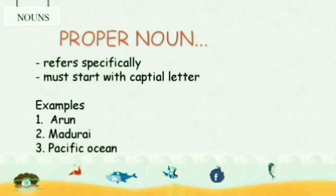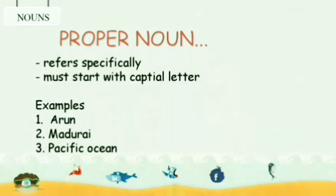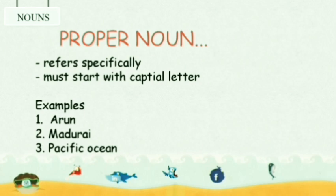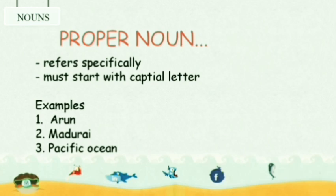Now let us see proper noun. Proper noun refers to things, places, or human beings in a specific manner. It particularizes the person and it must start with a capital letter. See the example. The first one is 'Arun' — here, we are particularizing a boy. The second one is 'Madurai' — it is the name of a city, so we are particularizing a place. And the third one is 'Pacific Ocean' — here, we are specifically mentioning a single thing. So these kinds of words are called proper nouns.